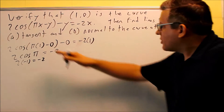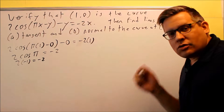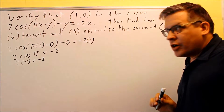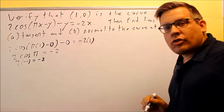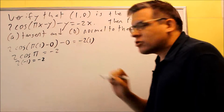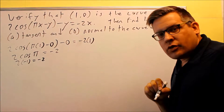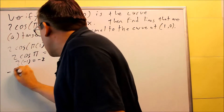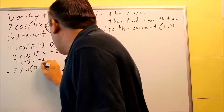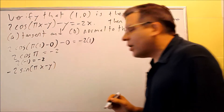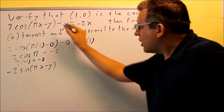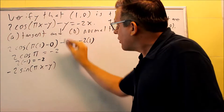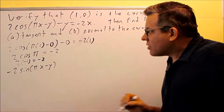Now we've got to find the line that's tangent, so that's going to require us to take the derivative. We need to take the derivative of all the terms on both sides of the equation. The first one is going to involve a chain rule. The outside function is a cosine, so the derivative of cosine is going to be negative sine. So we get negative 2 sine of (pi x minus y). But then we have to use the chain rule because we have something inside that's not a single variable, which means we need to multiply by the derivative of the inside.